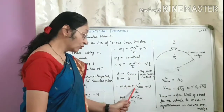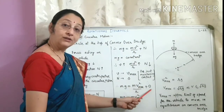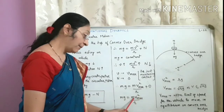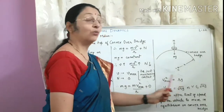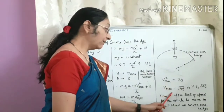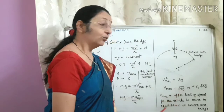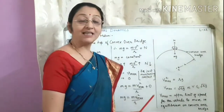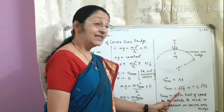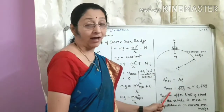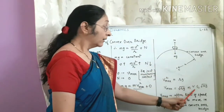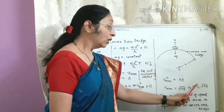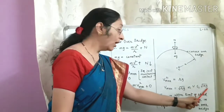When the vehicle is just maintaining contact, we write Mg = Mv_max²/R + 0, since N has become zero and V is now the maximum velocity. So Mg = Mv_max²/R. Mass cancels, giving V_max² = Rg, or V_max = √(Rg). So the maximum velocity the vehicle should possess at the top of the convex bridge is √(Rg). Hence, the velocity V should be less than or equal to √(Rg).